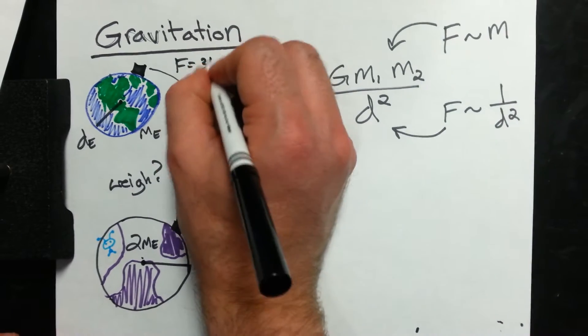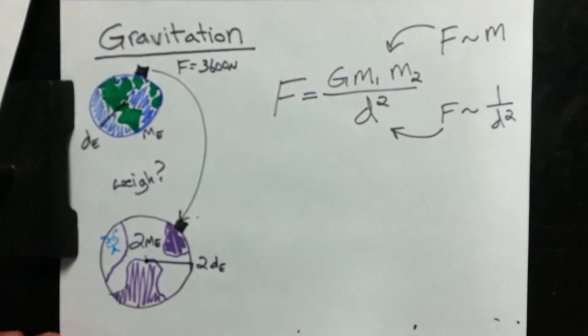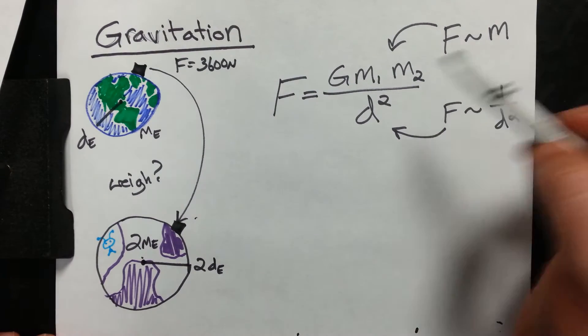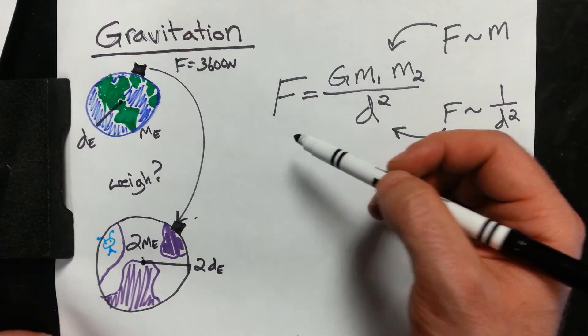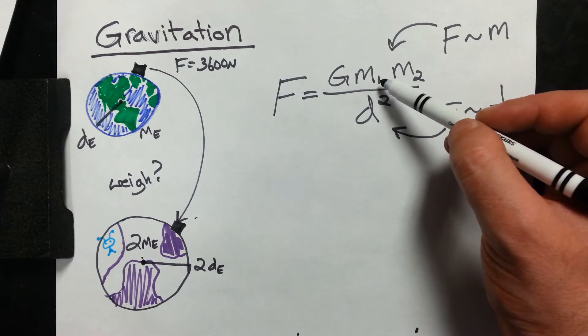So let's say on Earth it weighed 3,600 newtons originally on the Earth. And let's figure out, see if we can figure out what it's going to weigh on this new planet. Alright, so we have the weight of the planet, the force due to gravity is going to be equal to the gravitational constant times mass one and mass two.